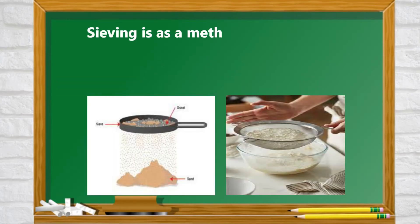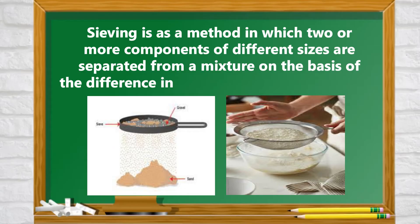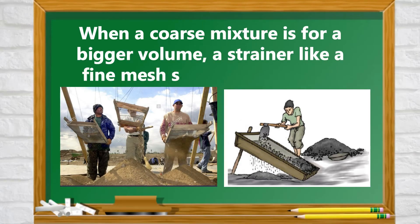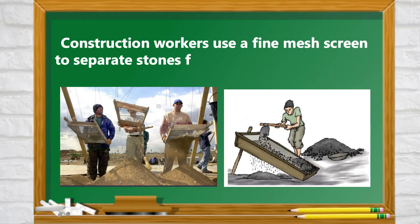Sieving. Sieving is a method in which two or more components of different sizes are separated from a mixture on the basis of the difference in their sizes which uses a sieve. When a coarse mixture is of a bigger volume, a strainer like a fine mesh screen can be used. Construction workers use a fine mesh screen to separate stones from sand in a load of gravel.